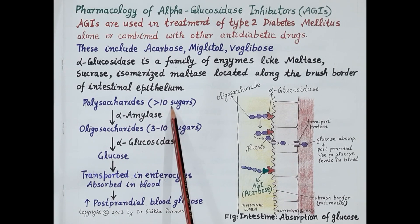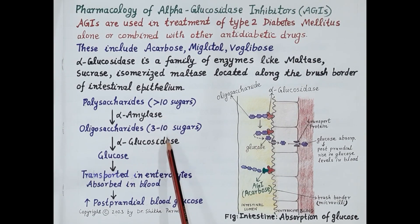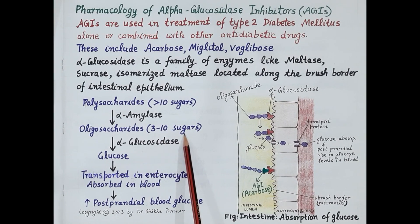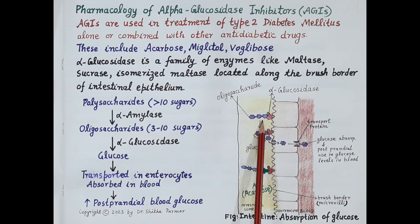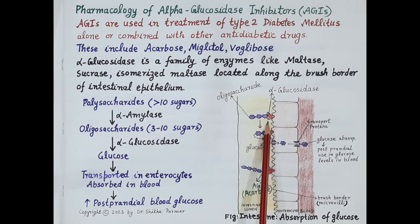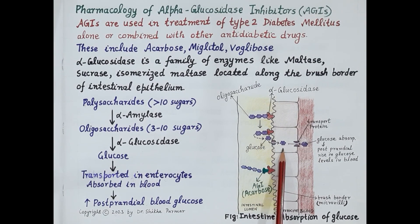These polysaccharides are broken down by the enzyme alpha-amylase. When polysaccharides break, shorter chains composed of 3 to 10 sugar molecules are produced — these are termed oligosaccharides. This oligosaccharide is then broken down by the enzyme alpha-glucosidase, releasing glucose. Transport proteins in the intestinal wall transport this glucose into the enterocytes, from where it is absorbed into the blood.